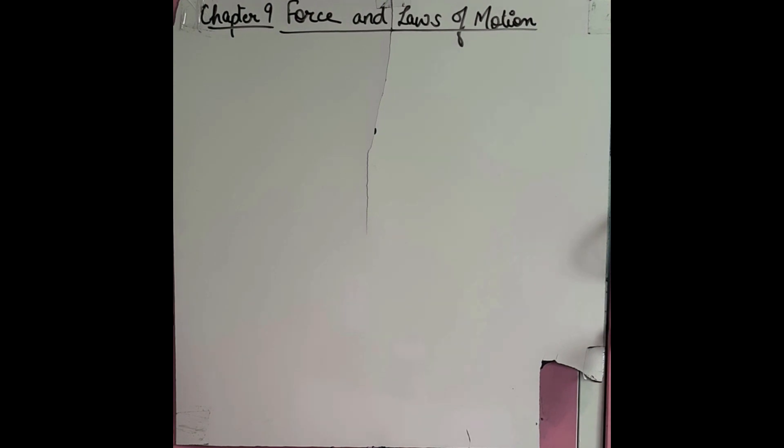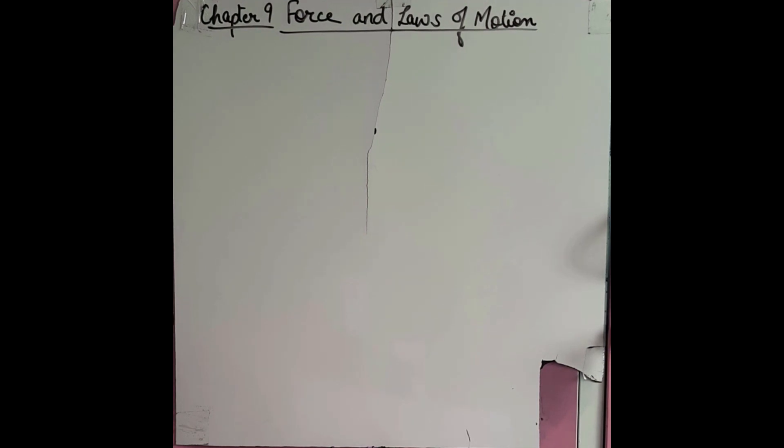So far we have discussed momentum and the second law of motion. Momentum is when there is an object having some mass and that object is moving with some velocity, so we say that the object has momentum. We also discussed Newton's second law of motion, which says that the rate of change of momentum of an object is proportional to the applied unbalanced force, and it acts in the direction of the force.